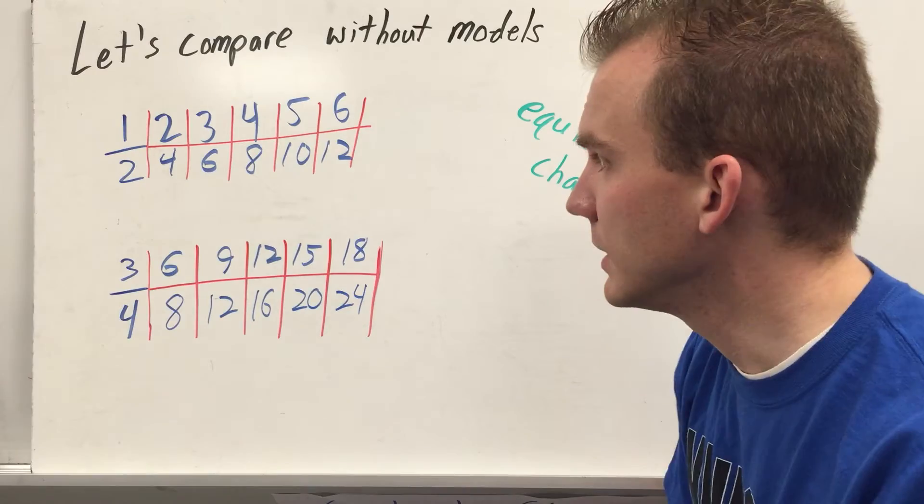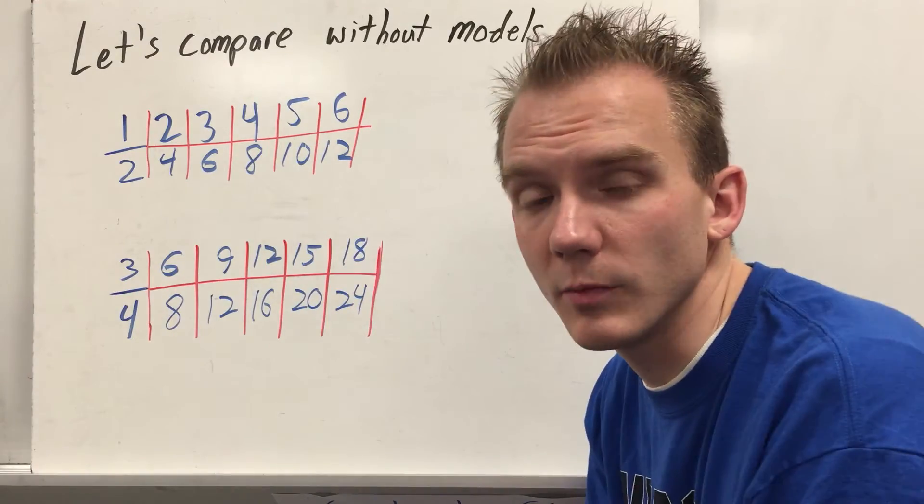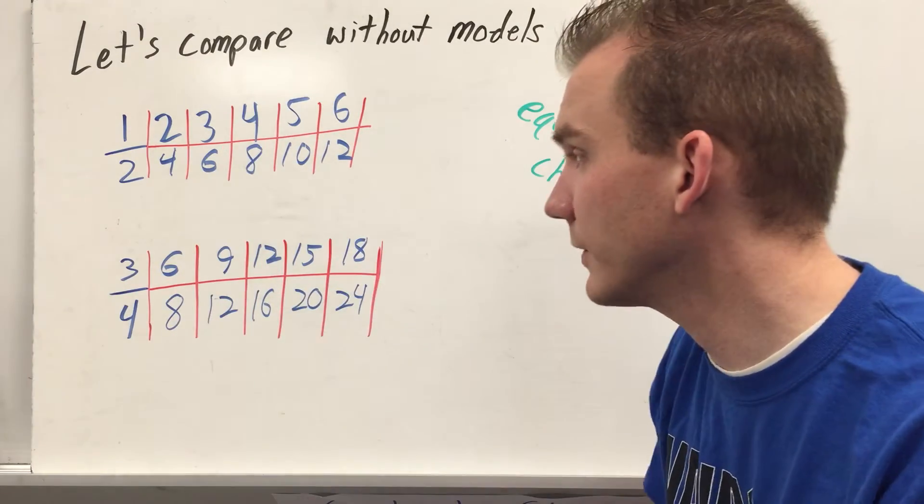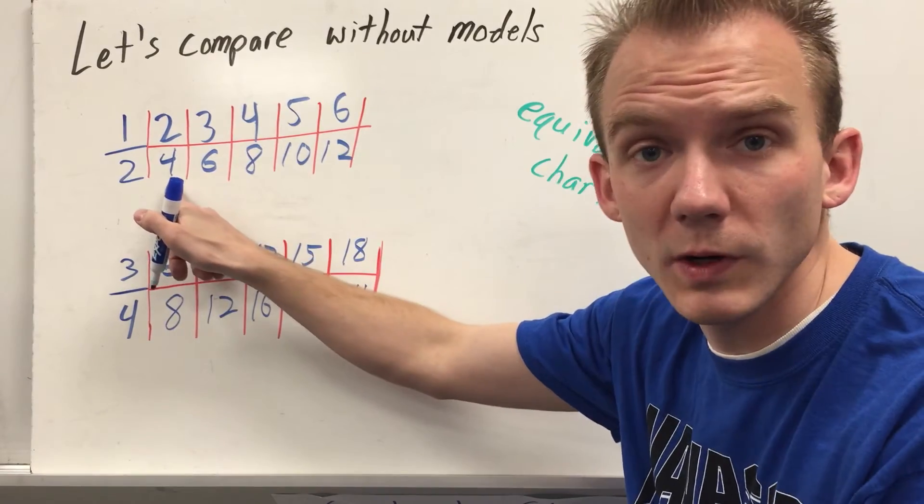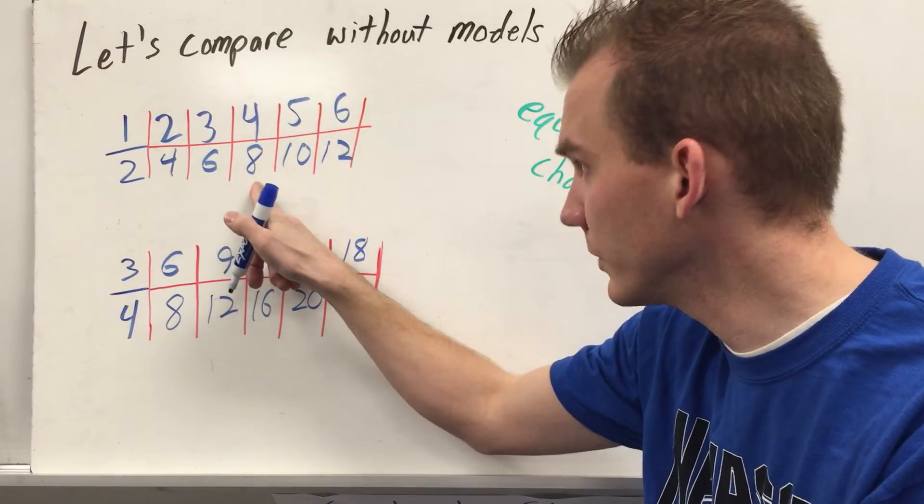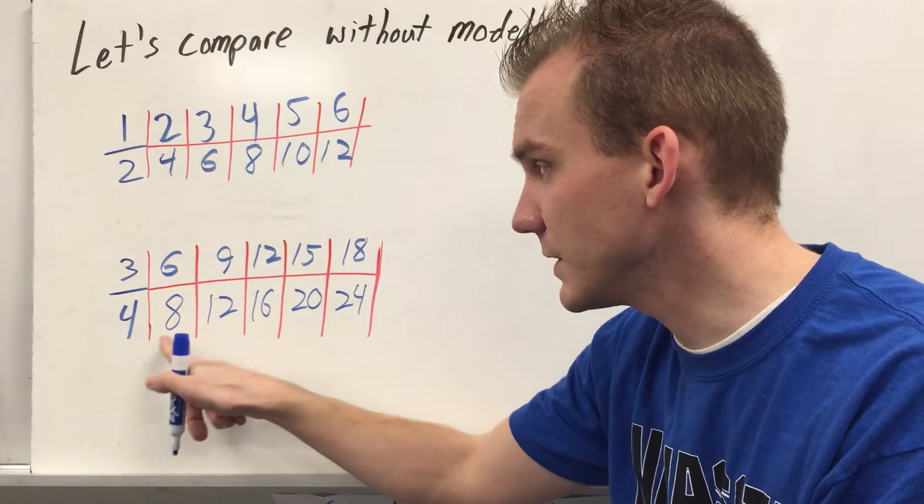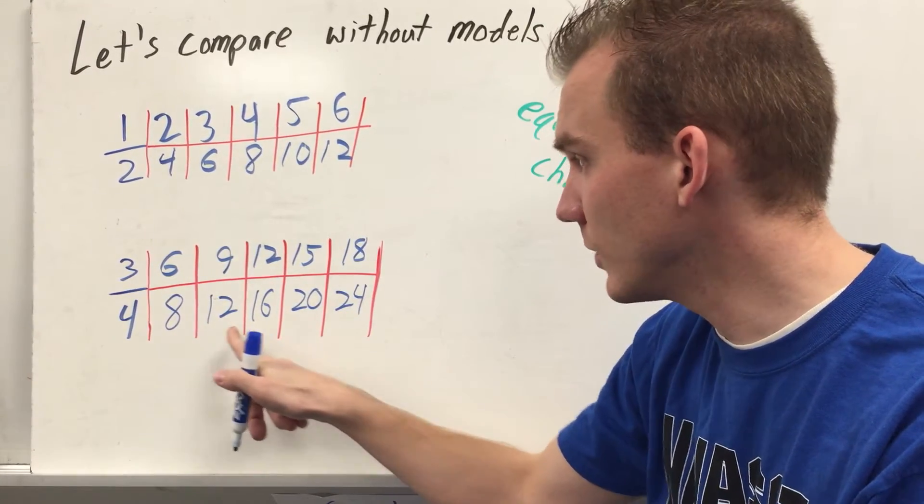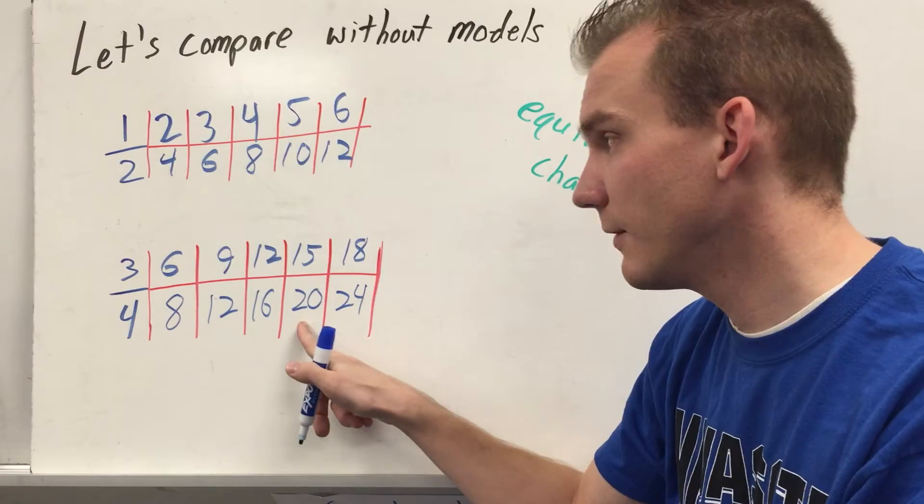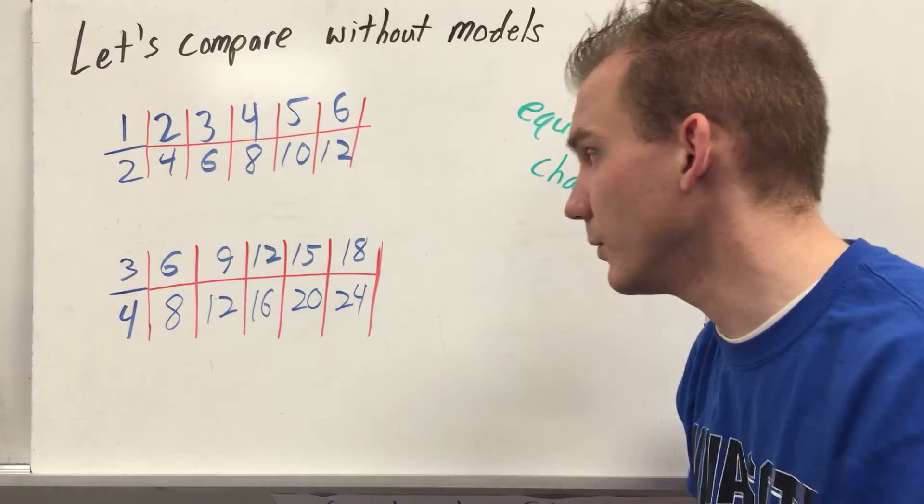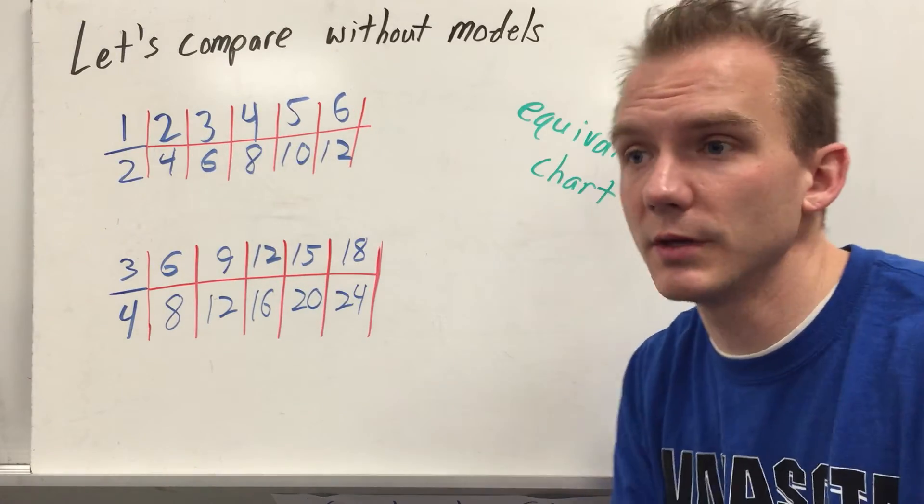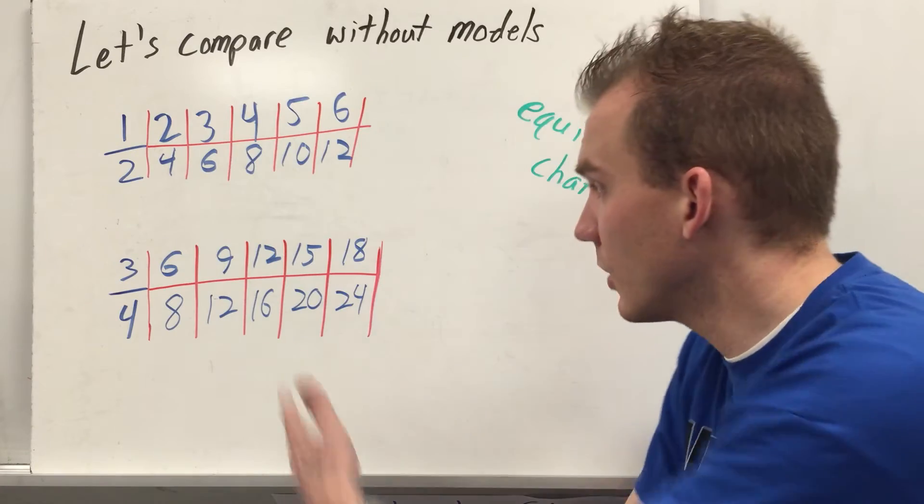What I've done now is if you've successfully counted by your numbers, you've created a whole series of equivalent fractions. 1 half equals 2 fourths, equals 3 sixths, equals 4 eighths, equals 5 tenths, equals 6 twelfths. 3 fourths equals 6 eighths, 9 twelfths, 12 sixteenths, 15 twentieths, 18 twenty-fourths. You can continue this pattern and come up with an infinite number of equivalent fractions.